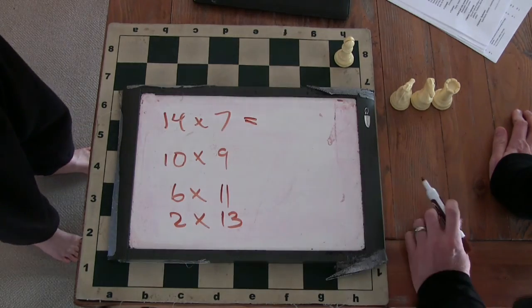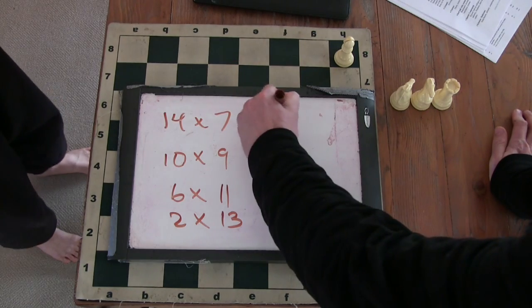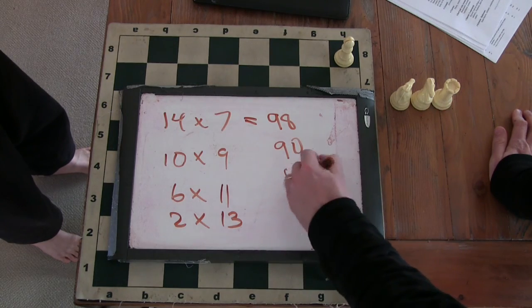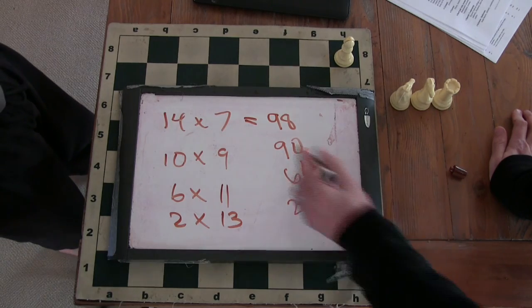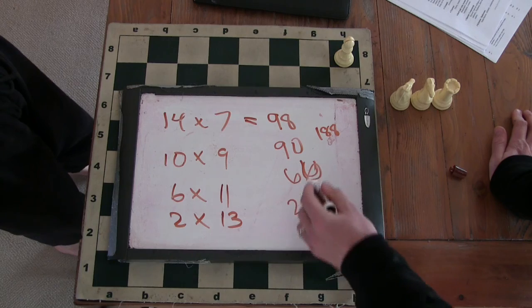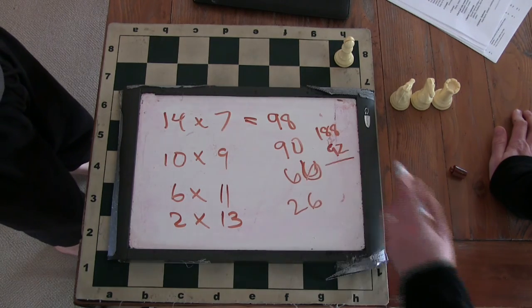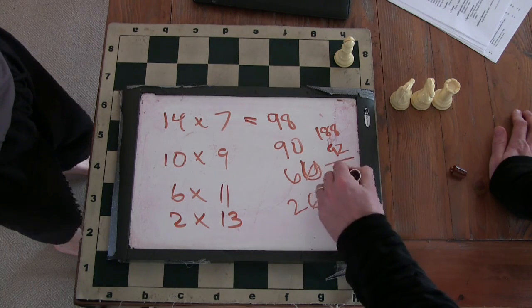All right. So, what's 14 times 7? That would be 98. 10 times 9 is 90. 6 times 11 is 66. 2 times 13 is 26. So, that's 188 plus 92. So, that's going to be 280.